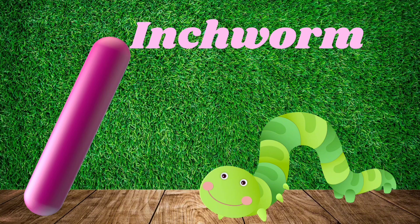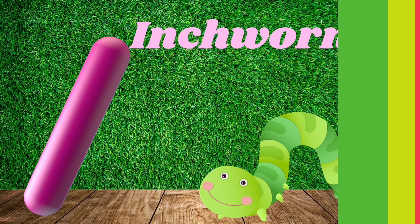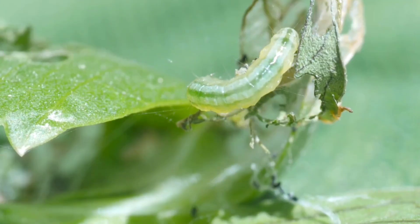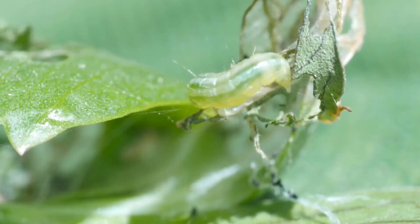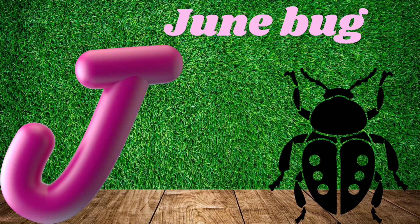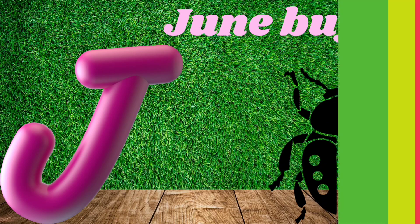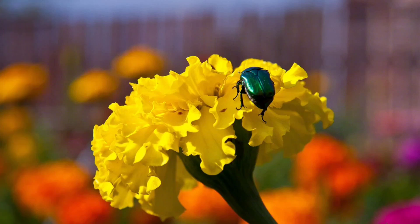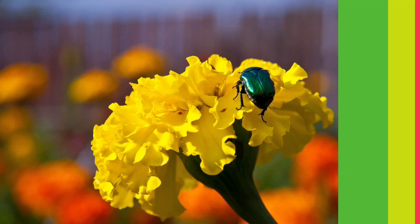I is for Inchworm. I, I, Inchworm. I, I, Inchworm. J is for Junebug. J, J, Junebug. J, J, Junebug.